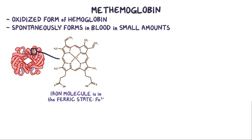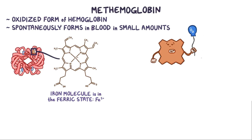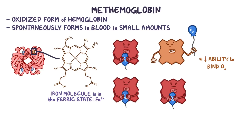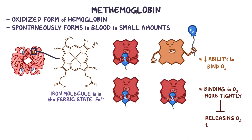The heme with the iron 3+ is like the lazy coworker, with a decreased ability to bind oxygen. The other three heme groups still have iron in the iron 2+ state, and they try to compensate for the slacker by binding to oxygen more tightly. However, this ends up being more harmful than helpful, as it prevents them from releasing oxygen to the tissues.